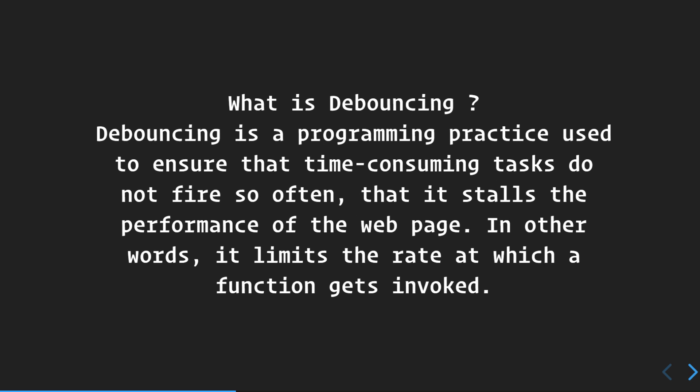Debouncing ensures that time-consuming tasks do not fire too often — they should fire, but at a minimal rate. For example, suppose you are searching for a product on an e-commerce site like Amazon that has debouncing implemented in its search. When you search for 'school bags' and type 'school', it is distinguished as a single keyword — only when the full keyword is typed is the async call to the server made.